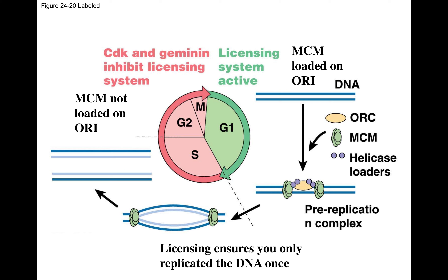During the S phase, you want to duplicate your DNA once and only once. There are thousands of origins of replication in a linear chromosome, and they all work at the same time so that you can duplicate your DNA in just a matter of minutes. What prevents the cell from duplicating more than once? Going from one copy to three or four copies would not be good — you want to license your DNA to be copied only once, and that licensing happens during G1.